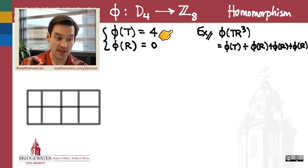I know what φ of t is, it's 4. I know what φ of r is, it's 0. And so when I compute all this out, I find that φ of tr³ is going to be 4.